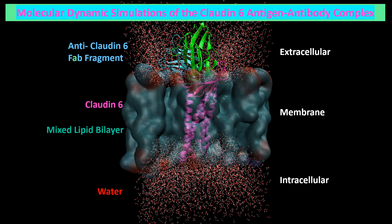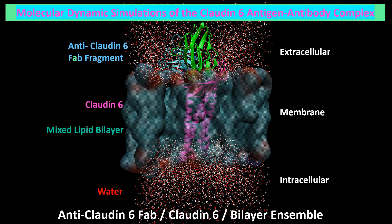Hi! In this video, I will briefly discuss the claudin proteins and why they are emerging as promising targets for cancer research. This presentation focuses on claudin-6 because it has garnered considerable attention as a potential therapeutic target due to its specific expression in several solid tumors. I will also show a molecular dynamic simulation of an antibody fragment interacting with claudin-6. These simulations can reveal structure-function relationships and help identify key residues involved in determining antibody antigen specificity, which is critical for developing safe and effective claudin-based oncotherapeutics.